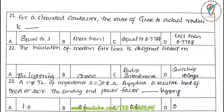Twenty-first question: for a stranded conductor, the ratio of GMR to the actual radius — theoretically r' = 0.7788r, but practically for a stranded conductor it is less than 0.7788r.